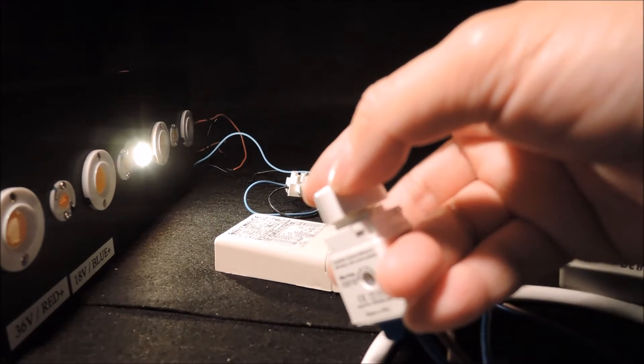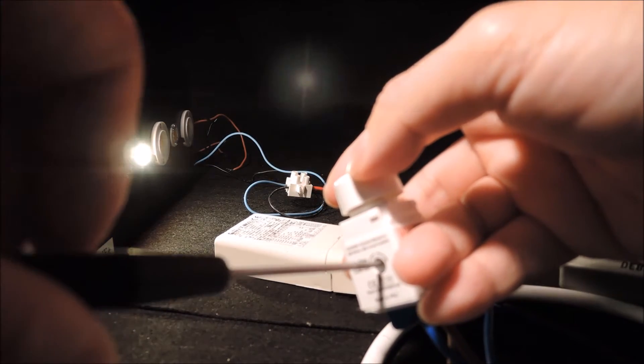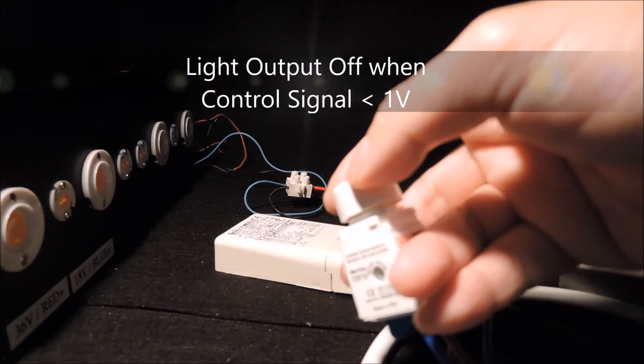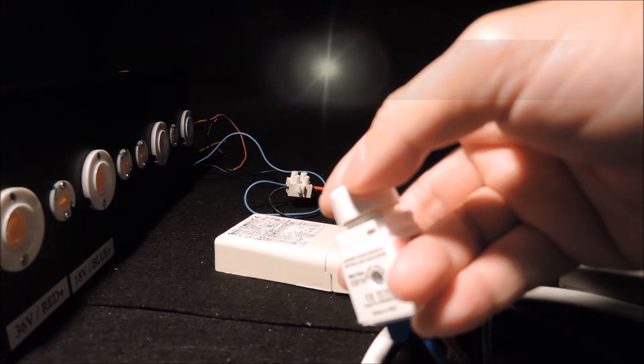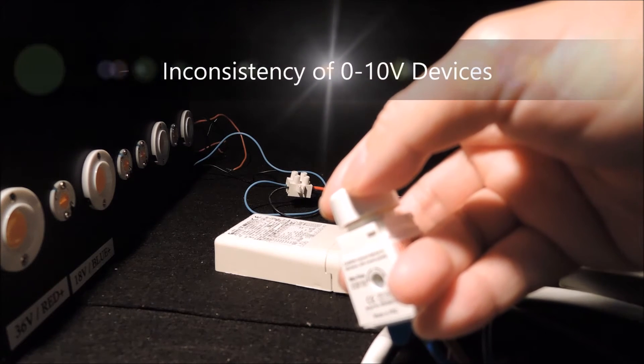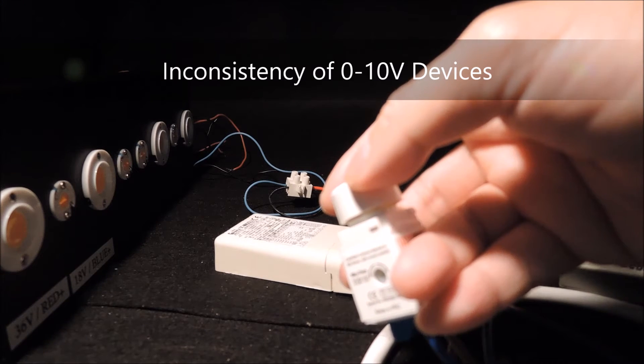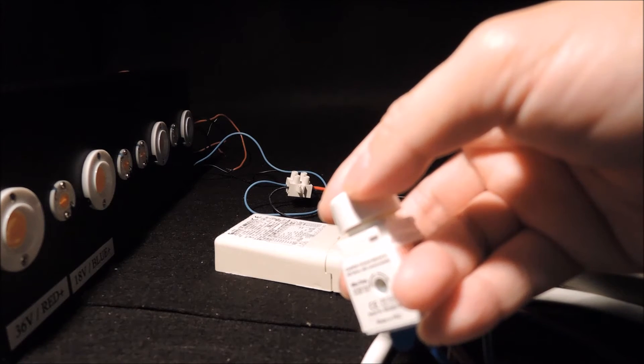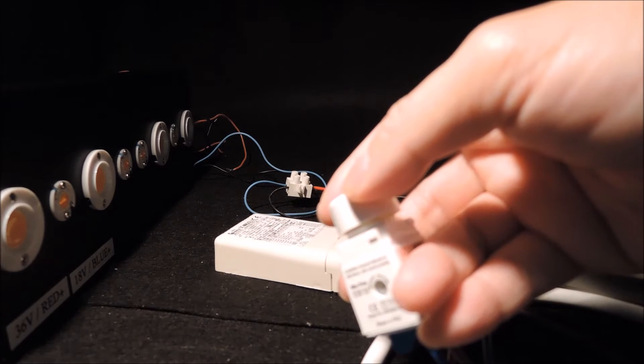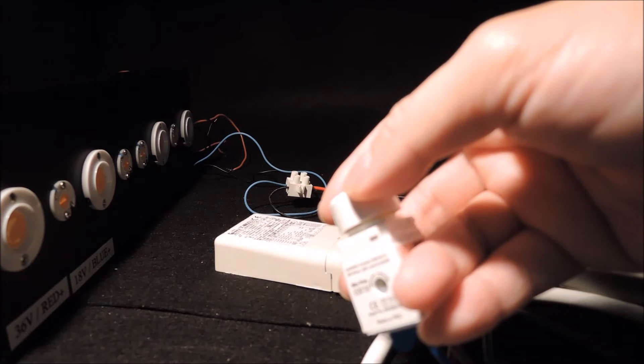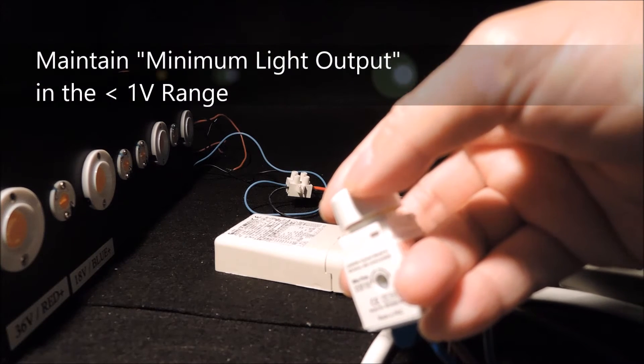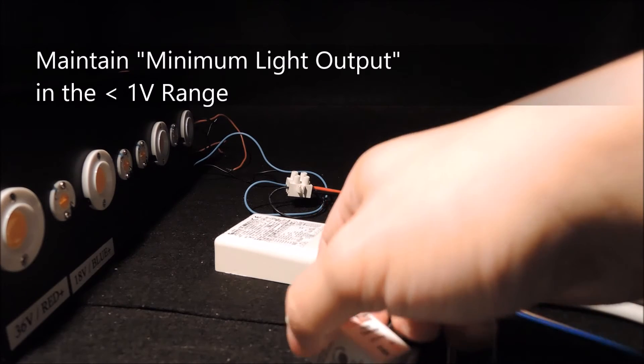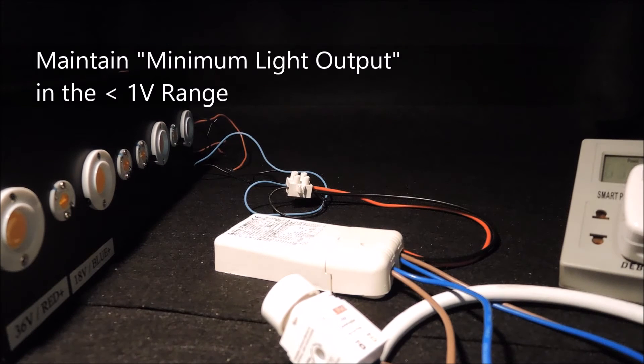If we continue to adjust the minimum trim downward, you'll see the driver actually switches off the light when the control signal hits below 1V. As a matter of fact, this is where you'll see the inconsistency of many 0 to 10V devices in the market. Some would have a bit of light, while some would switch off the light output as we've shown in this case. This is because there is not a clear definition for the less than 1V region. In this region, the driver should maintain a minimum light output which is largely up to the manufacturer's own interpretation.